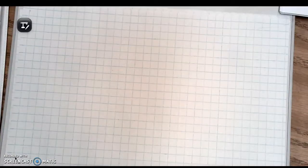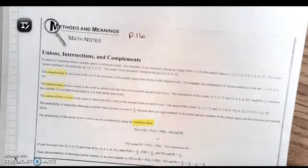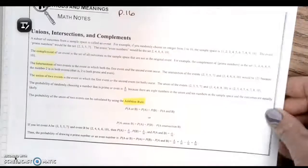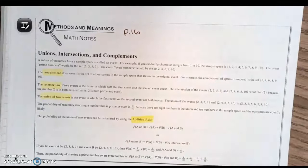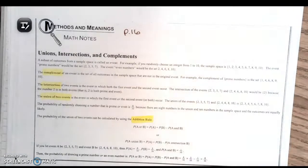In your packet, flip over to page 16 and go down to the bottom of page 16 where we have the math notes box. Math notes boxes are where they give you specific talk topics and provide definitions and example problems. Page 16 talks about unions, intersections, and complements.